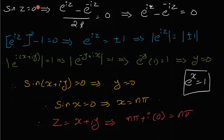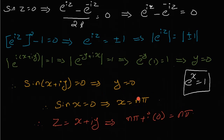So sin(z) equals zero and we have the imaginary part equal to zero. That is, sin(x + iy) equals zero with y part equal to zero. That means sin(x) equals zero and x equals nπ. For sin(z), z is x + iy, so y equals zero and x equals nπ.